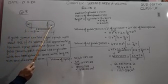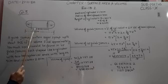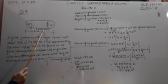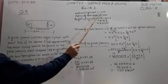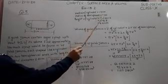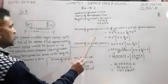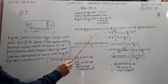Now, radius of cylinder is 1.4 centimeter, radius of hemisphere is 1.4, and the height of cylinder is 2.2. Volume of one gulab jamun equals volume of cylinder plus 2 times volume of hemisphere.